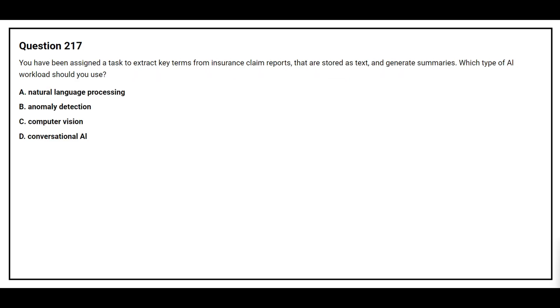Question number 217. You have been assigned a task to extract key terms from insurance claim reports that are stored as text and generate summaries. Which type of AI workload should you use? Option A: Natural language processing. Option B: Anomaly detection. Option C: Computer vision. Option D: Conversational AI. The correct answer is Option A, Natural language processing.